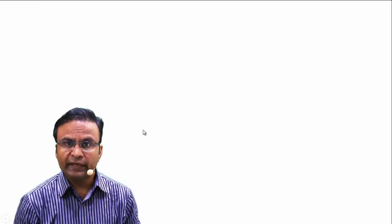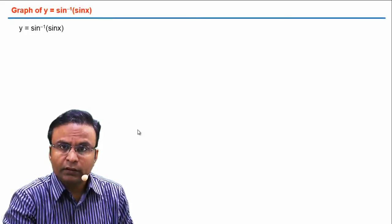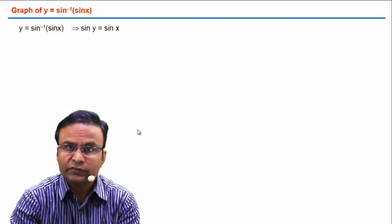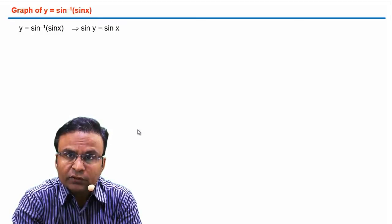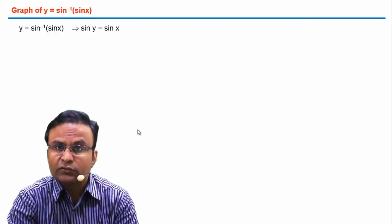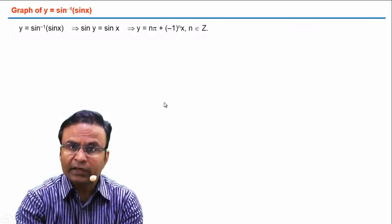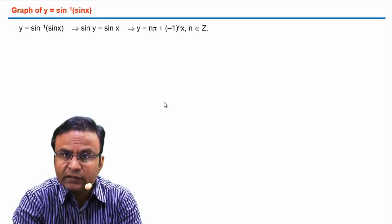Let's discuss one of the most important graphs in inverse trigonometric functions: y = sin⁻¹(sin x). Taking sin of both sides, we get sin y = sin x. To relate y and x, we solve this equation. The general solution is y = nπ - (-1)ⁿx, where n belongs to Z, the set of integers.